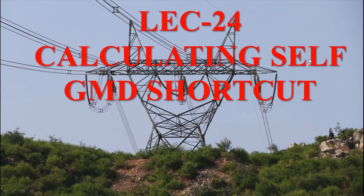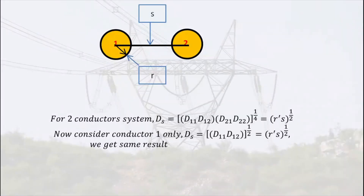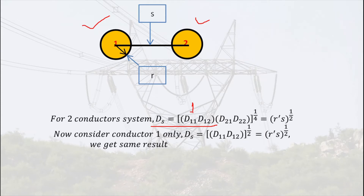Consider two conductors: conductor one and conductor two. For a two-conductor system, we can write the self-GMD DSS by taking the distance with respect to conductor one and multiplying it with the distances with respect to conductor two. We get D11 times D12, multiplied by D21 times D22, and take the power of 1 by n-squared. Since n equals 2, n-squared equals 4, so we take the power one-by-four.